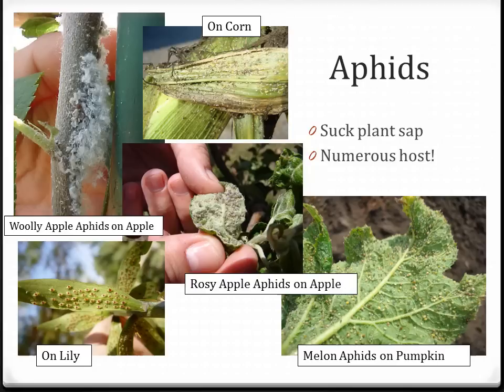Aphids are another group of sap-feeding insects with a wide host range on both edible and ornamental plants. The rosy apple aphids in the center picture actually cause leaf distortion, and by unrolling the leaves you're more easily able to identify their presence. The woolly apple aphids in the upper left excrete a cottony or woolly mass that gives them their name, which protects them from insecticide application, making their control somewhat more difficult.